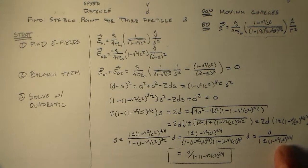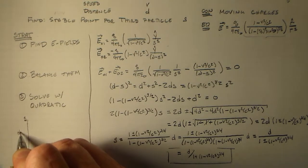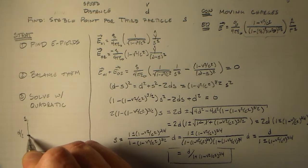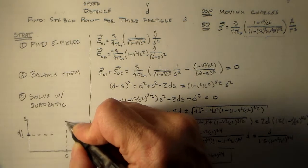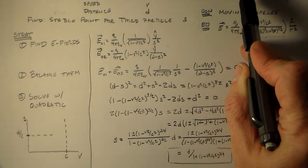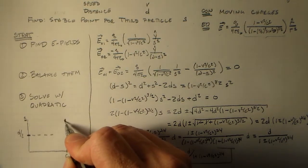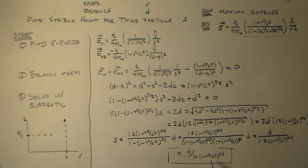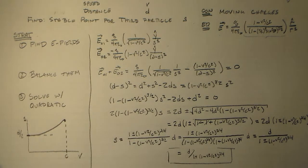So the answer is S = D / (1 + (1 − V²/C²)^(3/4)). We used physical reasoning to select the correct sign. At V = 0, S = D/2. At V = C, charge one creates a much stronger field, pushing the third charge up toward D. The value of S moves from D/2 toward D as V increases from 0 to C.